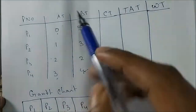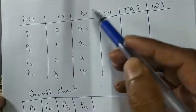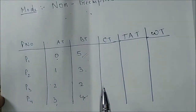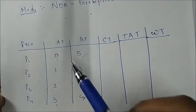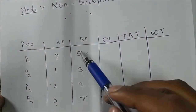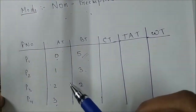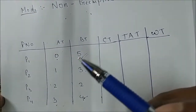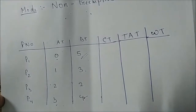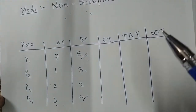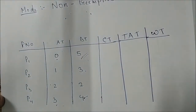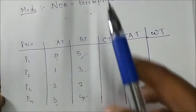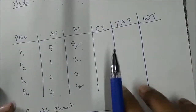Each process runs its full burst time because it is a non-preemptive scheduling algorithm. If it were preemptive, we would have a time quantum — like in Round Robin or SRTF, which are preemptive scheduling algorithms. But FCFS is non-preemptive.